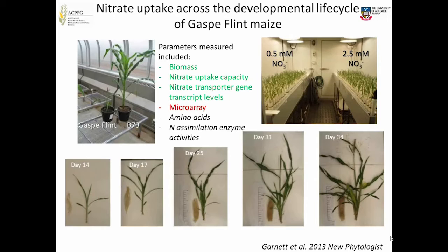Being a small stature maize, you can do experiments like this major hydroponics experiment. We grew a lot of them at two concentrations of nitrate and did a whole lot of harvests along the way — measuring biomass, uptake capacity, transcript levels, we did some microarray work, and also amino acids and all the nitrogen assimilation enzyme activities.